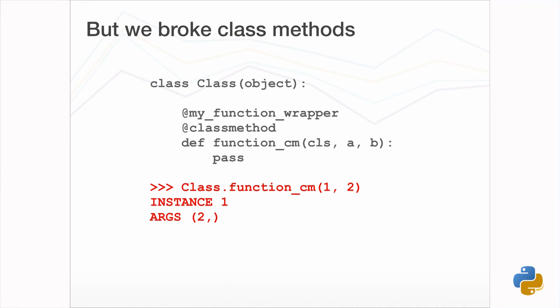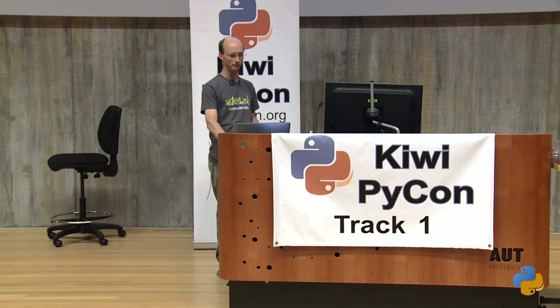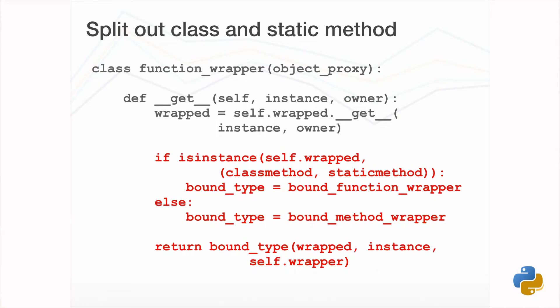This fix does upset things for classmethod and staticmethod, where instance is also passed as None. We can handle that in the top-level wrapper by looking at the type of the wrapped function prior to binding. If it is a classmethod or staticmethod, we know anything else is likely to be an instance method. For class or static methods we use the original bound wrapper, and the fix moves into a version of the wrapper specifically for instance methods.